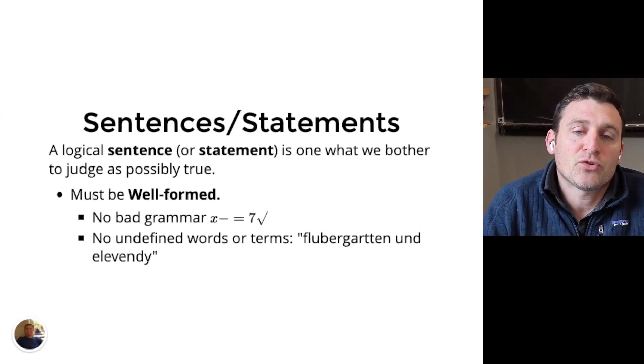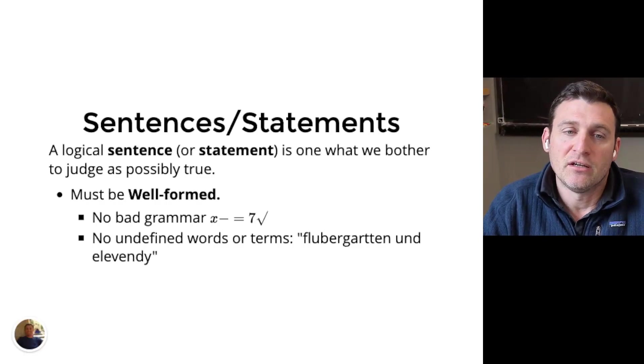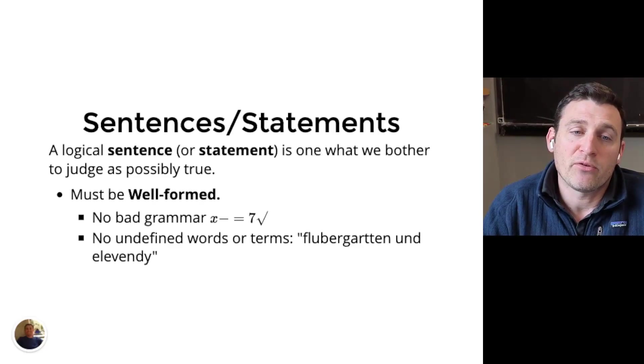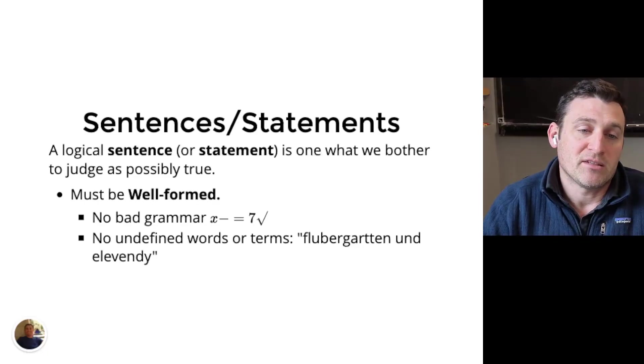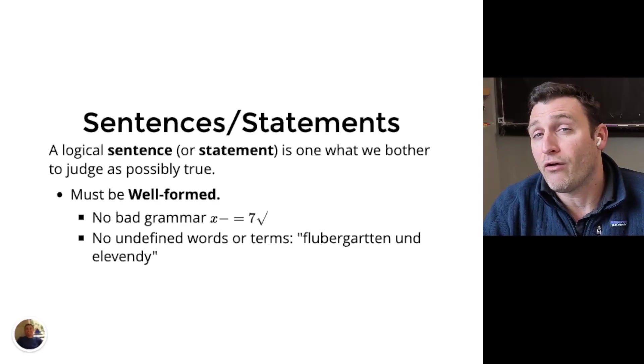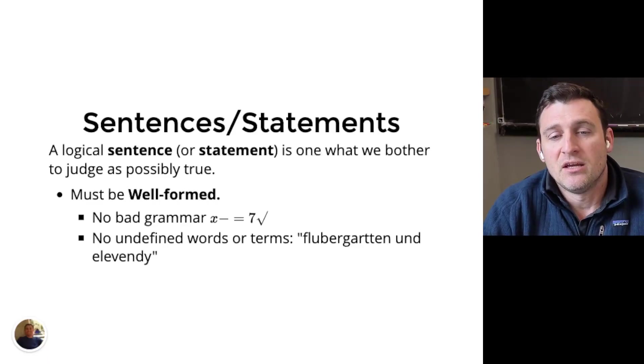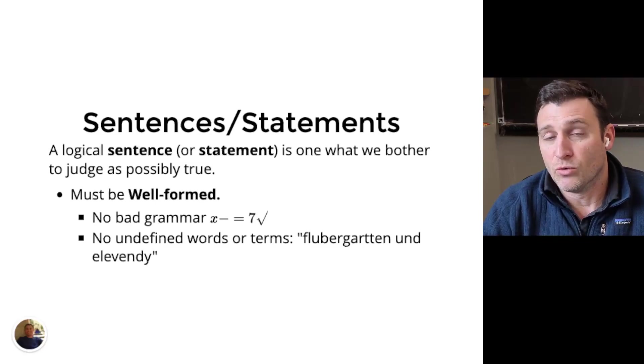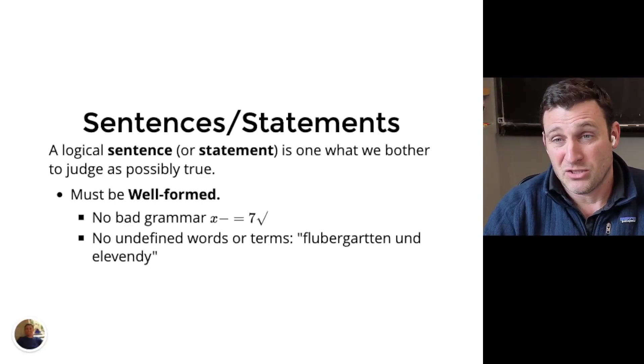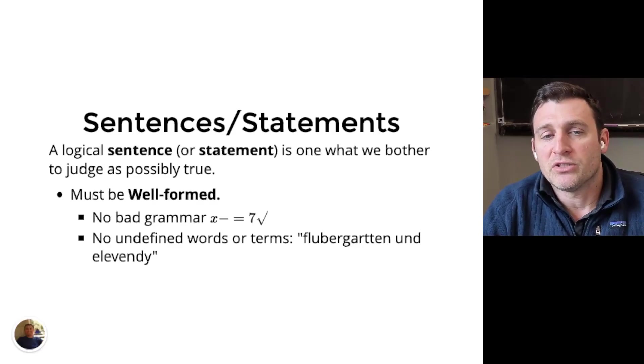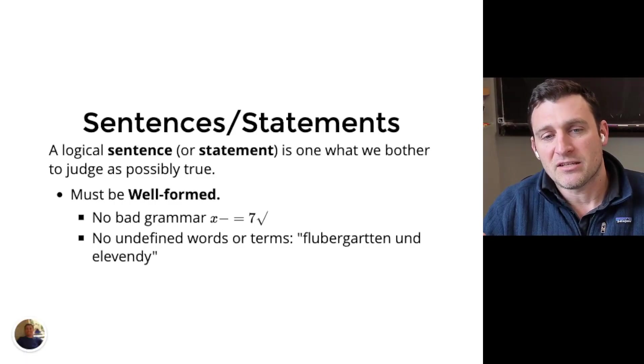Now let's try to put some context to this, some rules that will let us make this into mathematics. We're going to try to make judgments about only some of the things that we might say. We'll call these things sentences or statements of logic. A logical sentence or statement is one where we bother to judge that it's possibly true. Sometimes we use the words well-formed.